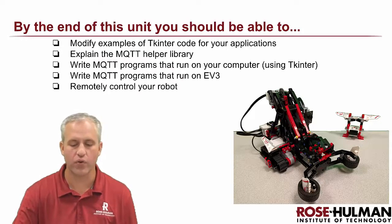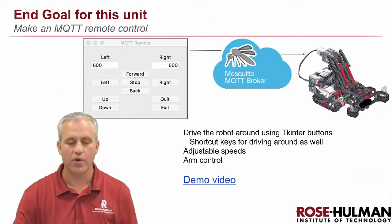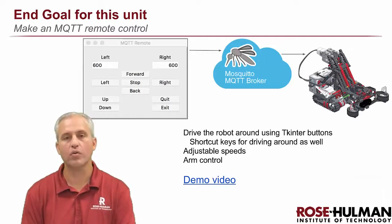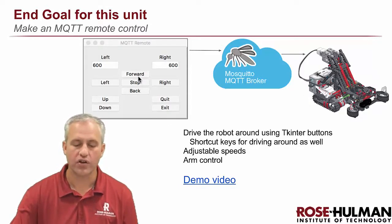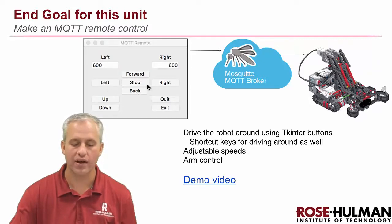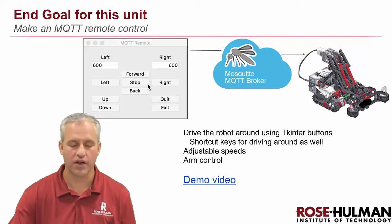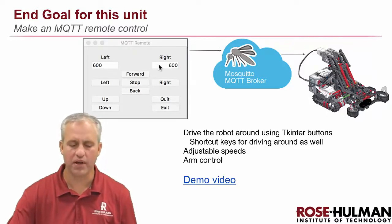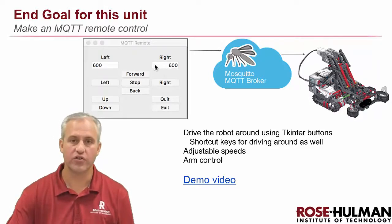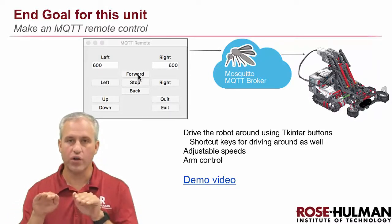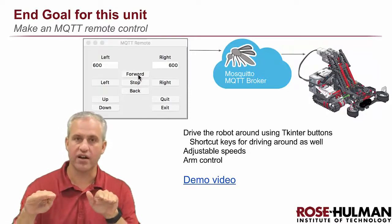Let's look at a demo of the end goal. You're going to make a remote control to control your robot. It will have forwards, backwards, left, right, and stop buttons. You'll be able to set the speed for the left and right motor independently. For example, if you click forwards it goes at 600/600; if you change the right to 900 and click forwards, it goes faster on the right at 600/900.